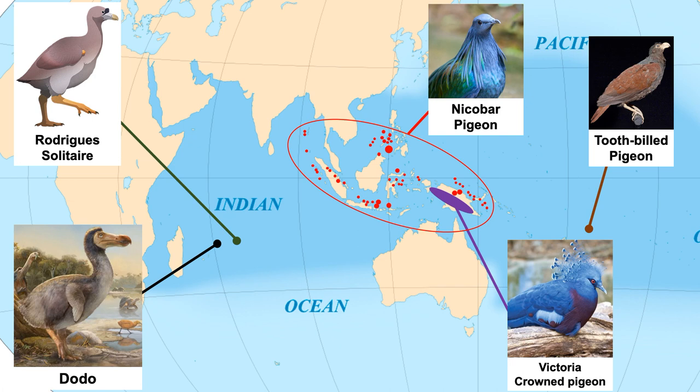Very likely, a bird probably not too dissimilar from the Nicobar pigeon flew, as birds are wont to do, from its Asian home and island hopped across the Indian Ocean. Other closely related pigeons include the Victoria crowned pigeon and the tooth-billed pigeon, Didunculus strigirostris. Sadly, the latter bird is critically endangered.